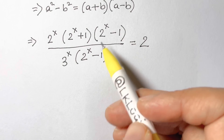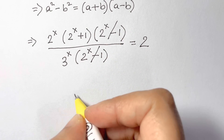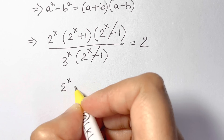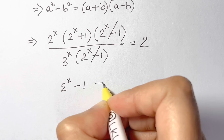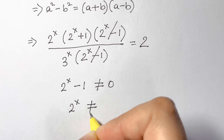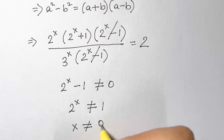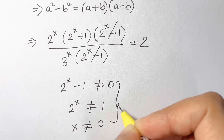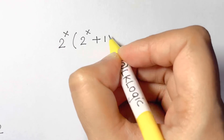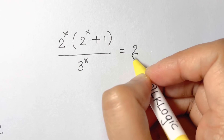We can cancel out (2 to the power of x minus 1) from numerator and denominator, provided that 2 to the power of x minus 1 is not equal to 0, meaning 2 to the power of x is not equal to 1, so x is not equal to 0. With this condition, we now have 2 to the power of x times (2 to the power of x plus 1) over 3 to the power of x equals 2.